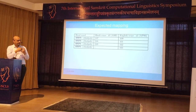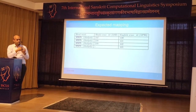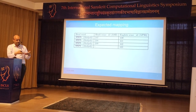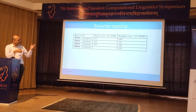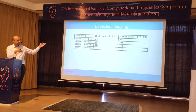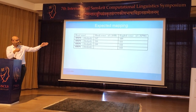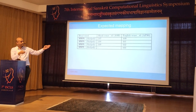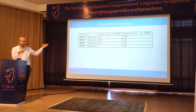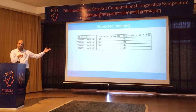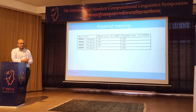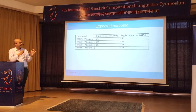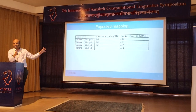So if a human annotator were to connect these two, he would do something like this: the Hindi senses would be mapped to the English senses, and whatever senses are not mapped would be kept blank. This is what the expected mapping looks like.